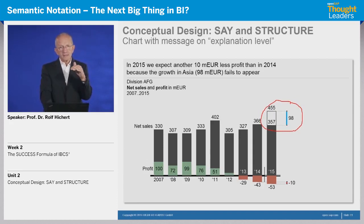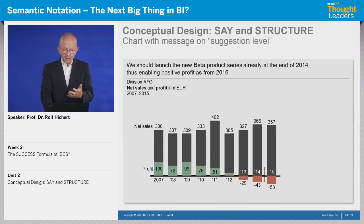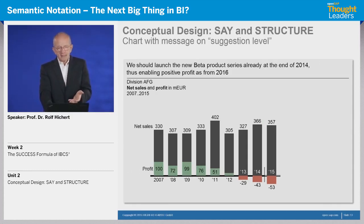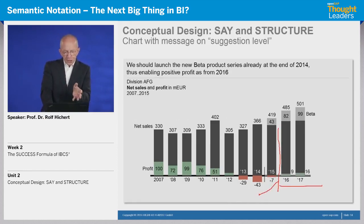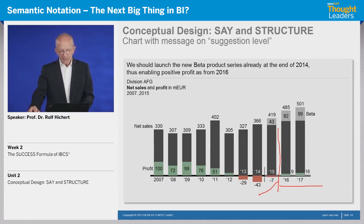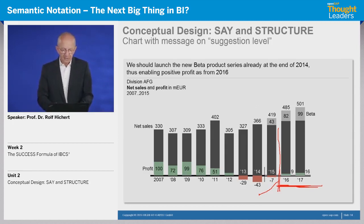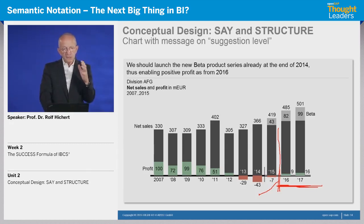The third level would be a suggestion. We say we should arrange and launch a better project, and this would lead to much better profits beginning in 2016 and 2017 — we will come back into the positive profit zone. This is a brief introduction into the message part, into the say part of success.